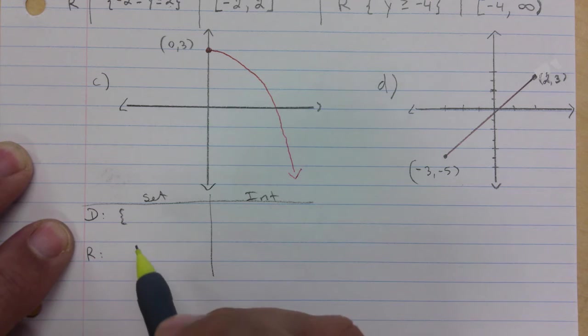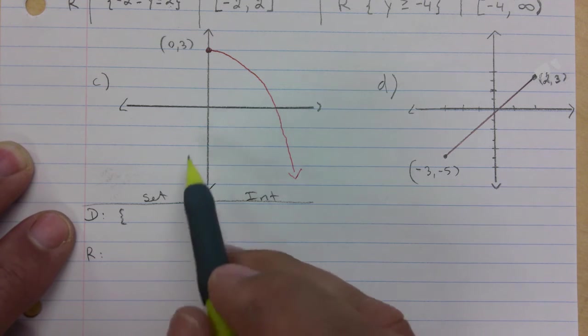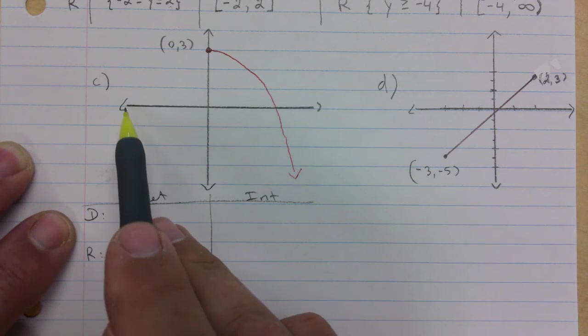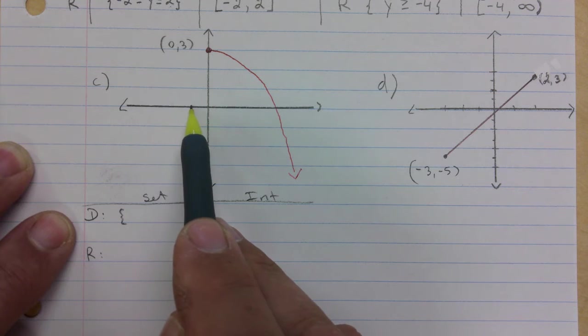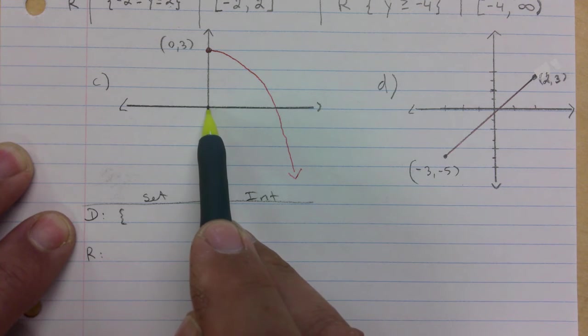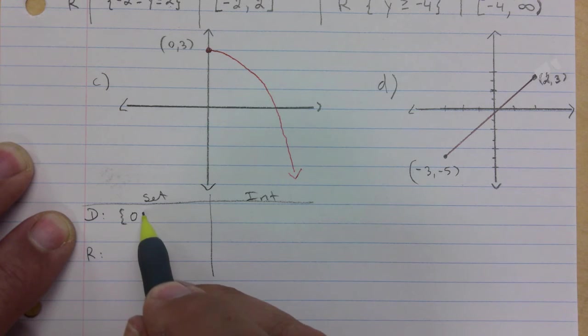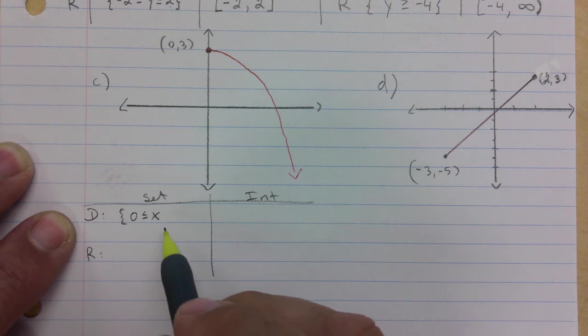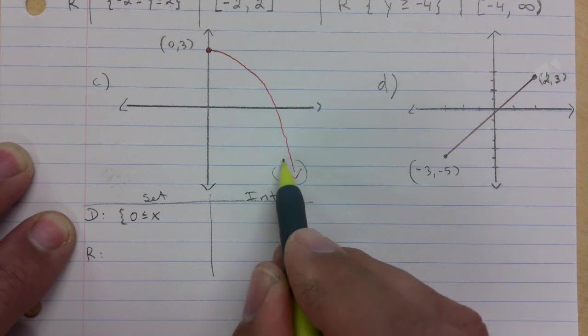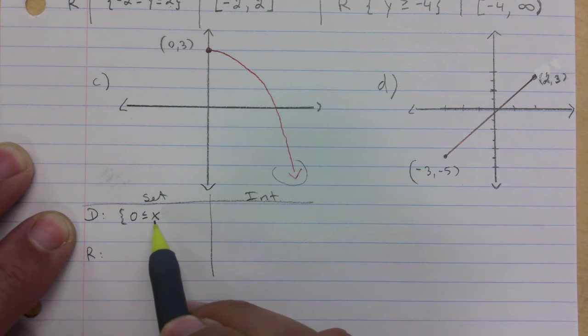We need to use the squiggly brackets for a set. Domain focuses on the x, so you travel along. There's nothing, you start when you hit the y-axis, so at x equal to zero, that's when it starts. So x will be greater than or equal to... oh, and it never ends.